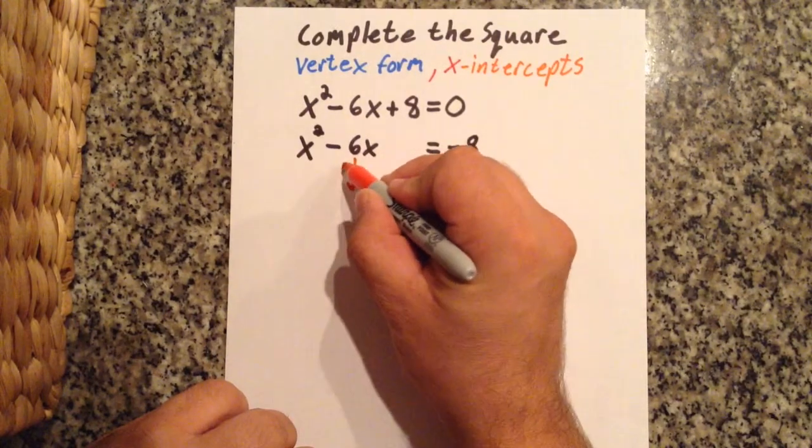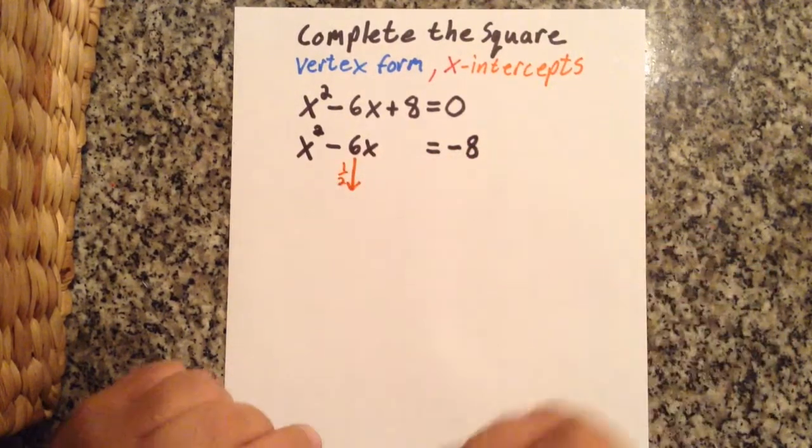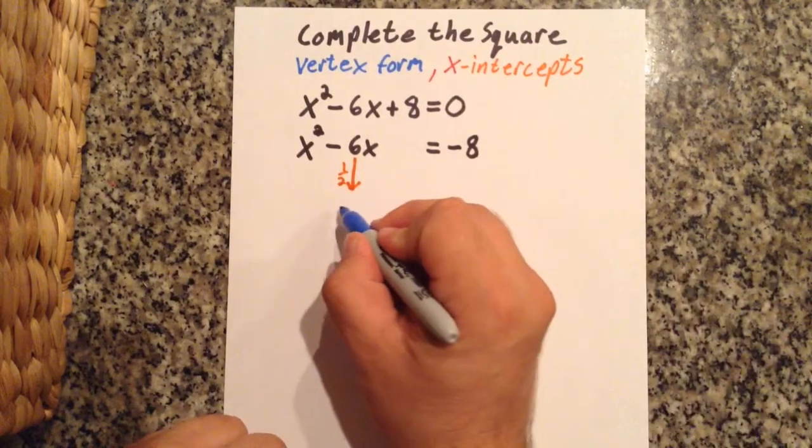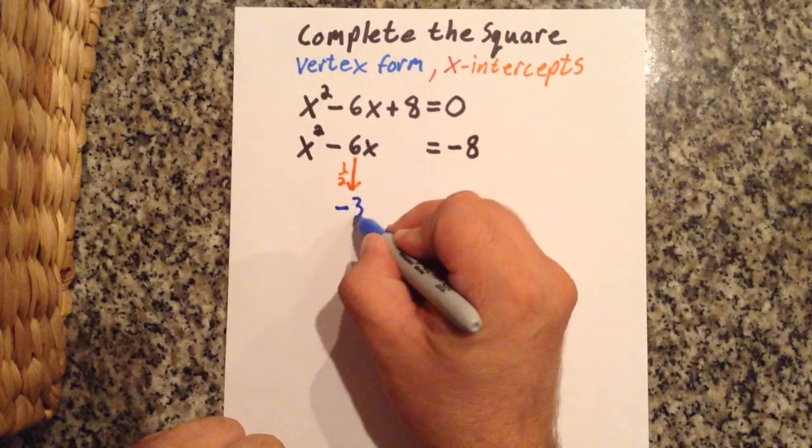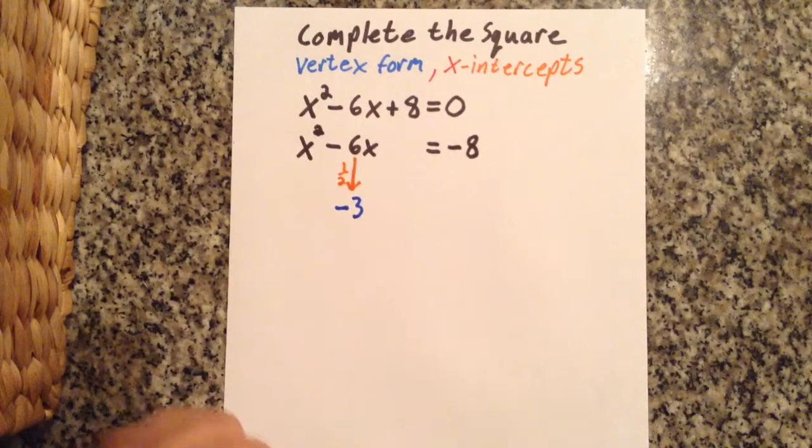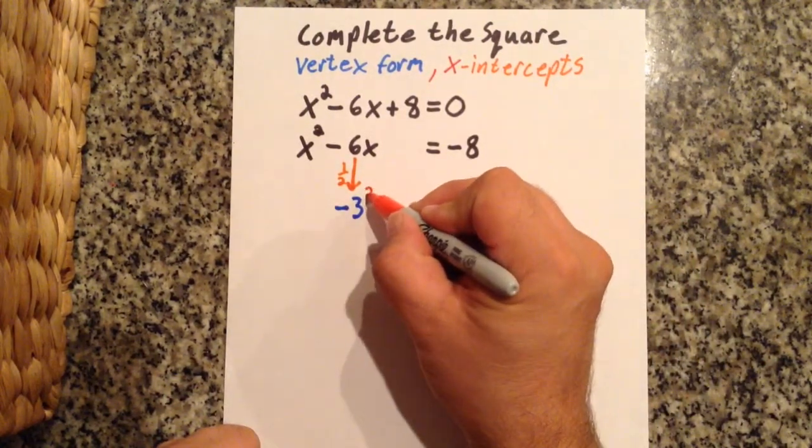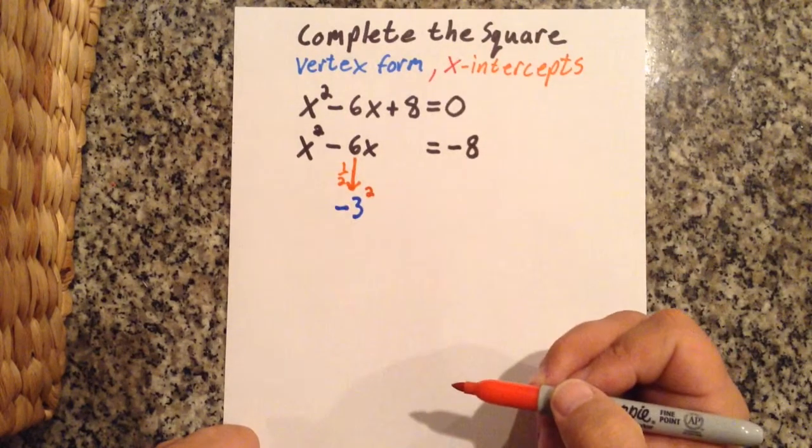I want to leave a little space there. Now I'm going to do the complete the square process. You take half of the B term, so half of negative 6 is negative 3. Now you want to square that negative 3, negative 3 times negative 3.